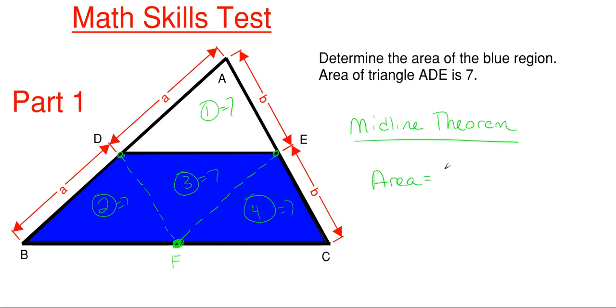The area of the blue region is 3 times 7, which equals 21. The calculation is straightforward: three triangles in the blue area, each with area 7, gives us a total area of 21.